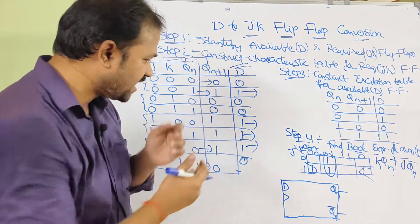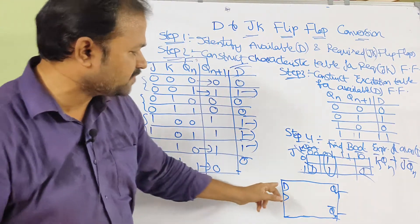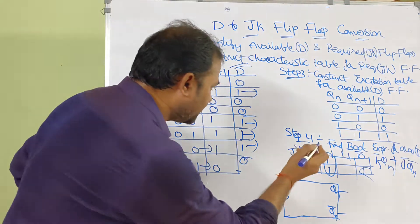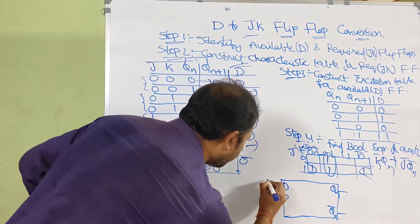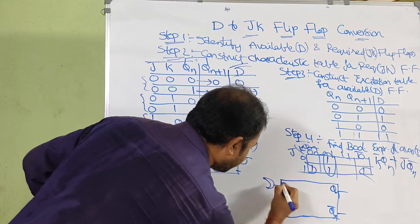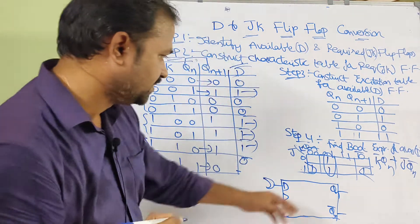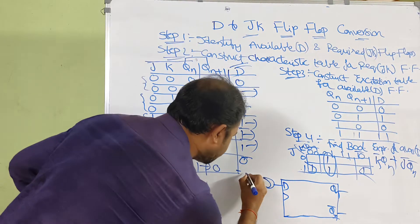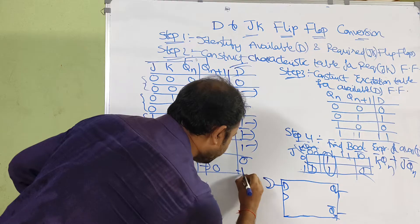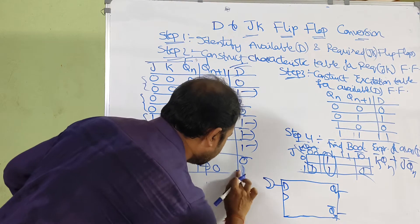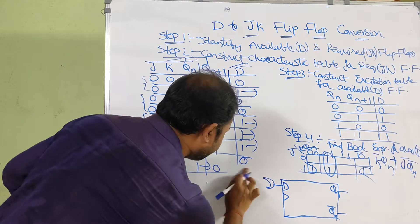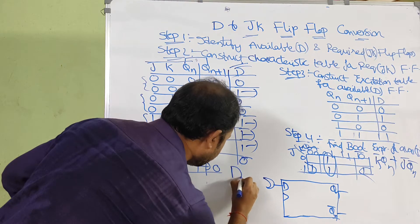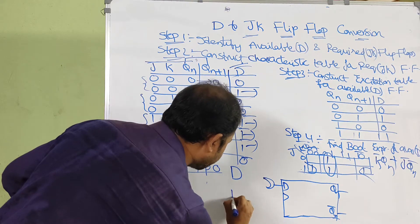So for that we have to draw the circuit diagram — that is step 5. Step 5 derives the circuit from the OR gate. Here we need to use two AND gates.